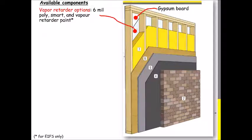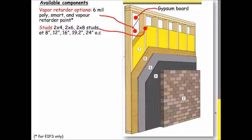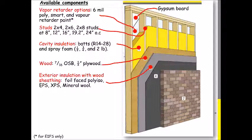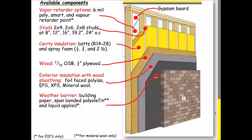Gypsum wallboard is always on the inside. We have a vapor retarder that could be either 6mm poly, a smart vapor retarder, or in some cases vapor retarder paint. Stud choices are 2x4, 2x6, or 2x8, spaced from 8 inches to 24 inches on center. The cavity can have R14 batts for 2x4 walls and up to R28 batts for 2x8 walls, and also options for half, three-quarter, or two-pound foam. Wood sheathing available is 7/16 OSB or half-inch plywood. Exterior insulation options include foil-faced polyisocyanurate, expanded polystyrene, extruded polystyrene, and mineral wool — the semi-rigid type. For weather barrier, we have standard building paper and in some cases spun-bonded polyolefin and liquid-applied membranes.